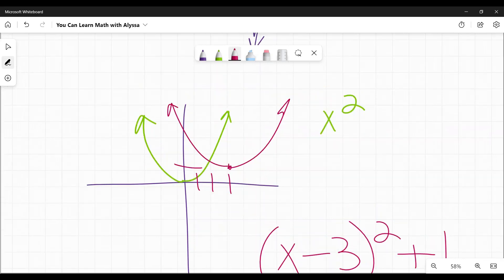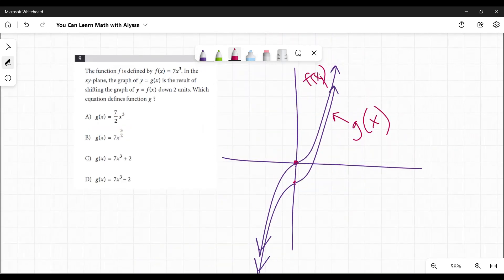I know there's exceptions out there. I'm sure there are. There's always exceptions, but that's what you're most likely to see on this SAT. So here in this case, we have 7x³, and it is moving down two.